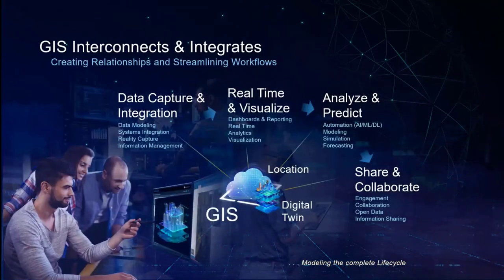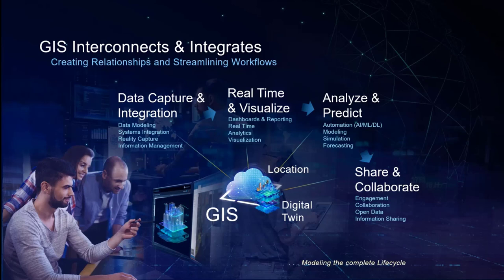Through location, GIS is often involved in key aspects of creating and working with digital twins — certainly in data capture and integration, real-time visualization, analysis, and sharing and collaboration. Many of our users are coming to us because Esri has broad capability around engagement and systems of engagement, to take information being processed in something like a digital twin or series of data models and communicate that outward to large communities.